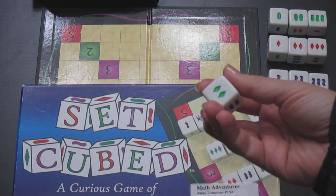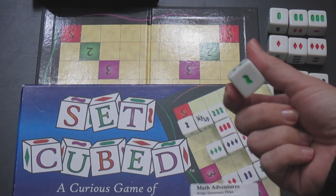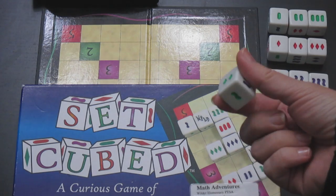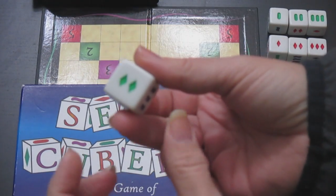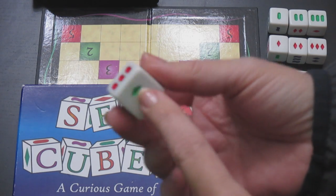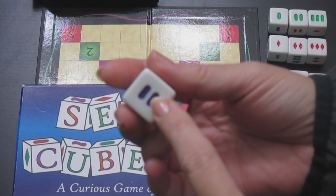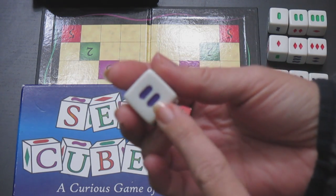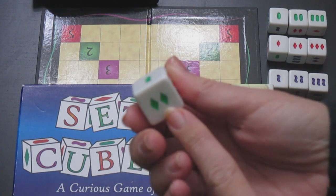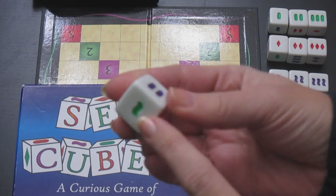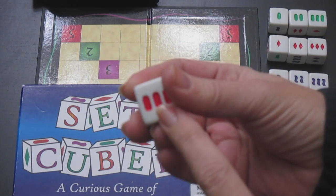The hardest part about Set Cubed is understanding what makes a set. A set always consists of three dice. Each dice has different colors: green, red, and purple; different shapes: ovals, squigglies, and diamonds; and different number of elements. There can be one, there can be two, or there can be three.